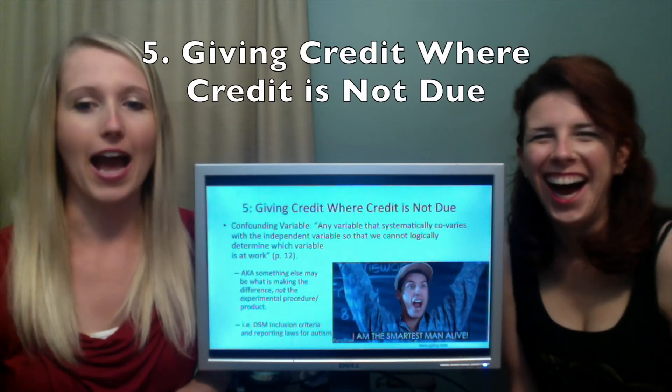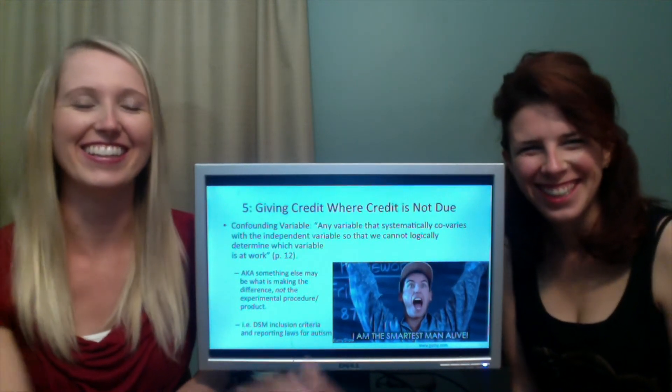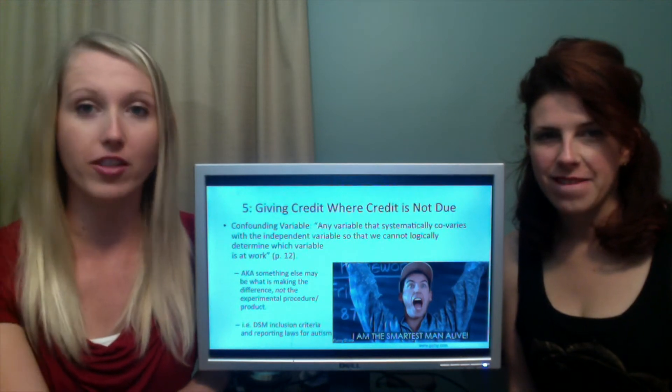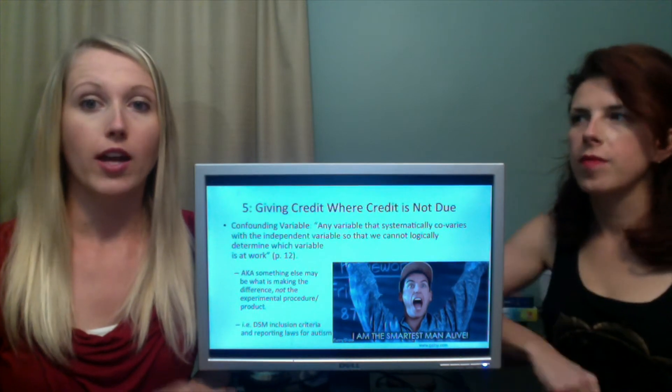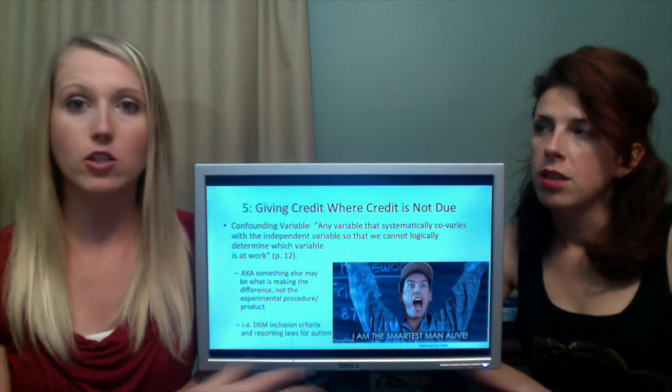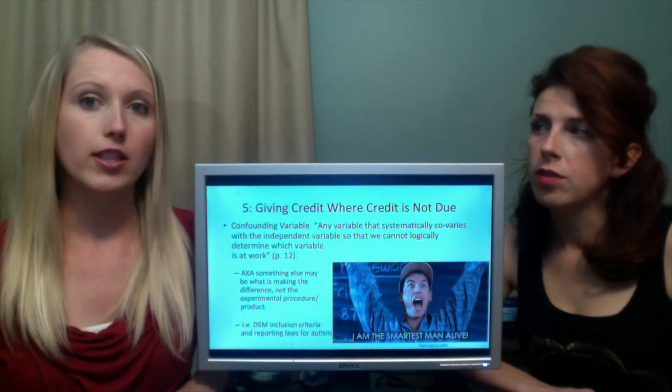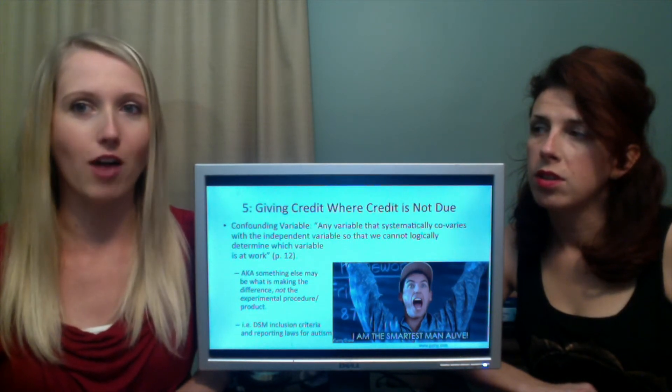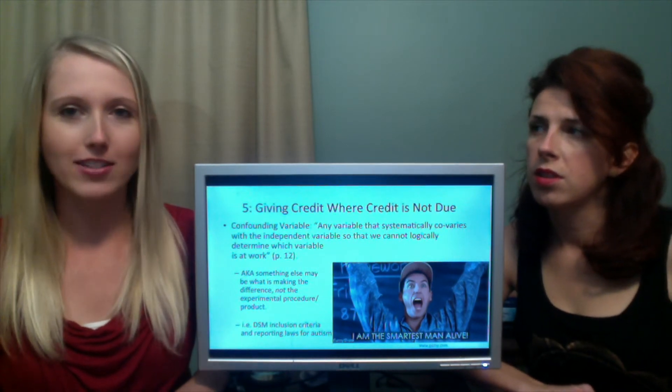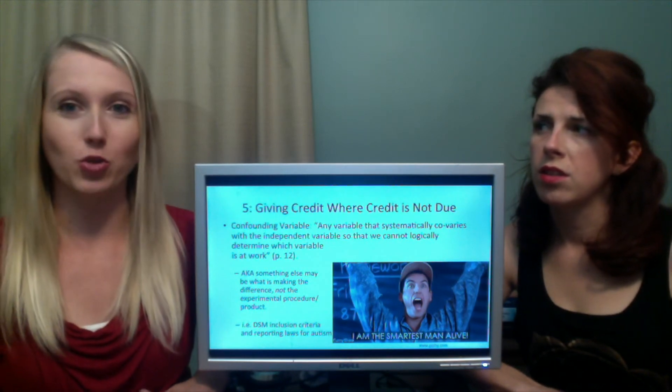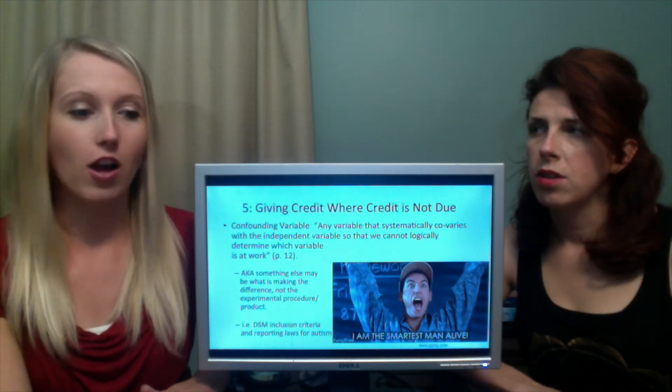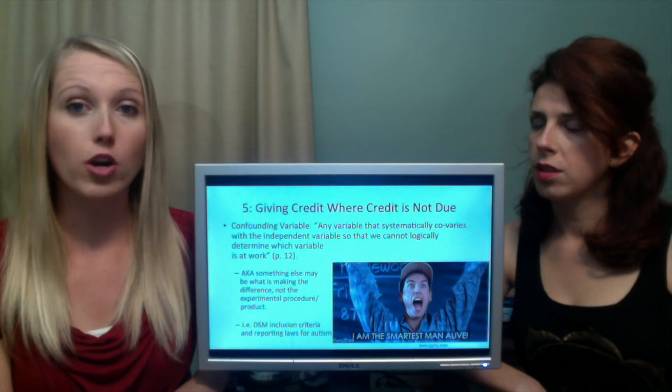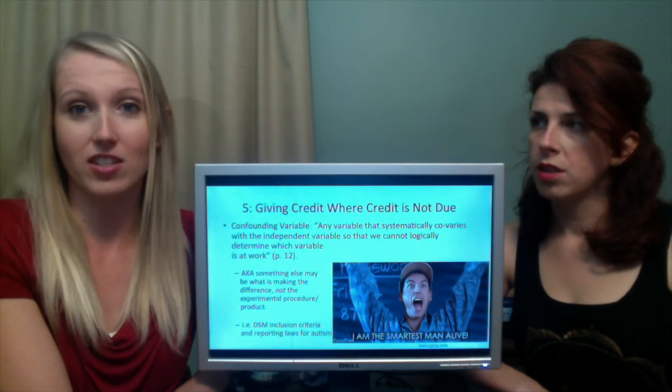Giving credit where credit is not due. A confounding variable is basically something else is causing the result. Something other than what you're testing is causing your results. A good example of a confounding variable is, let's go back to my example for my research project. Let's say during the control group, the people who didn't get the intervention, during their test, the fire alarm went off. But the experimental group, while I was testing them, the fire alarm didn't go off. Well, if the fire alarm goes off in the middle of your test and you've got to get up and leave and then come back, you're probably not going to do as well. So the reason the experimental group performed better may not be because my intervention worked. It may just be because the fire alarm went off for the other group.